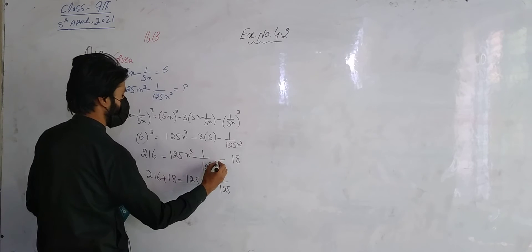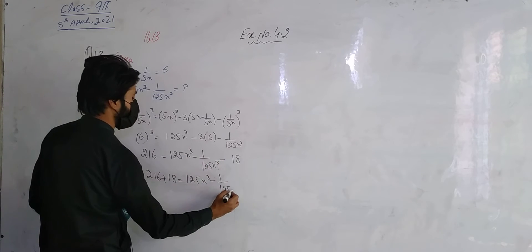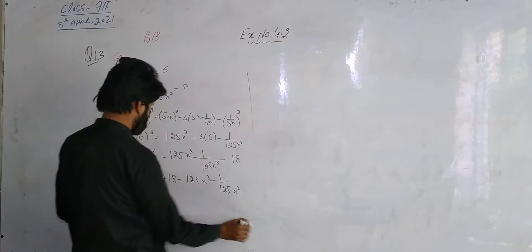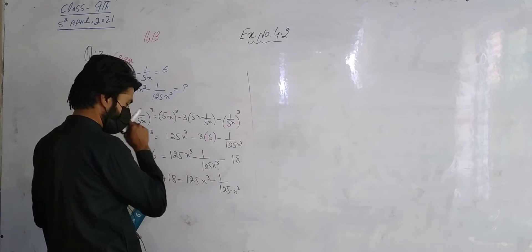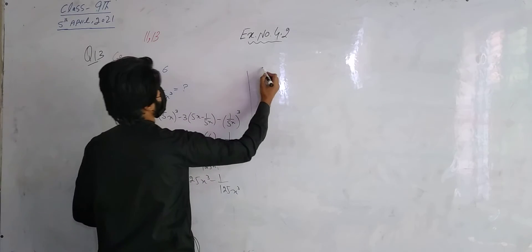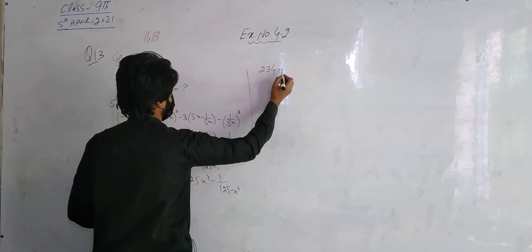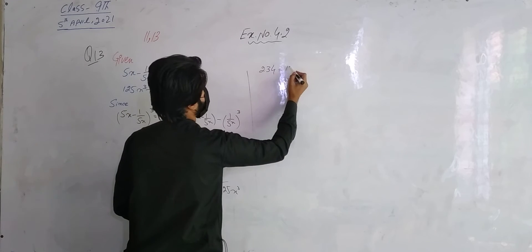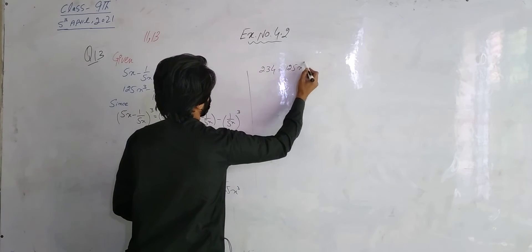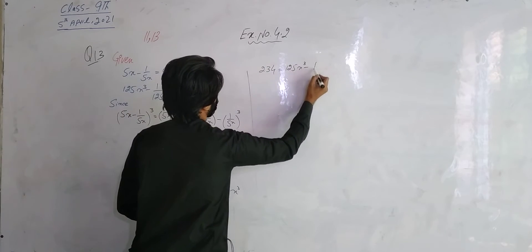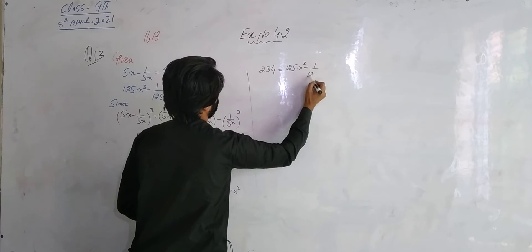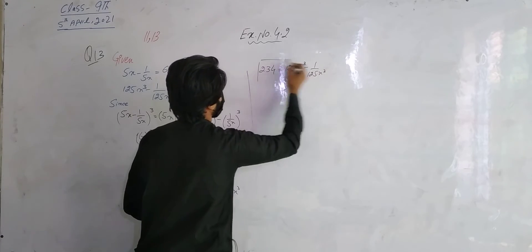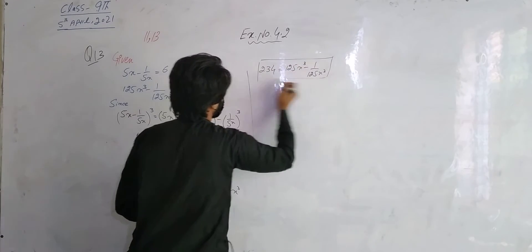So x cube will be here. Here we can see 18, so we can add them. This will come to us: 234 is equal to 1/25 x cube minus 1/25 x cube. So this will be our required answer.